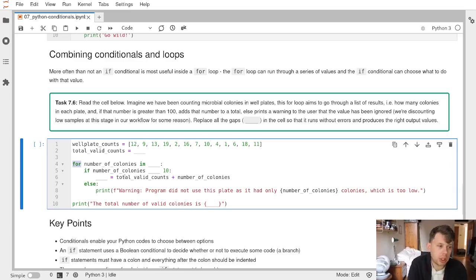We're going to put this all together by replacing all the gaps and combine all the knowledge from the last two notebooks into one little program. This is our list of well plate counts. We've got some well plates and we've counted the number of colonies for each well. We start with zero total valid counts.